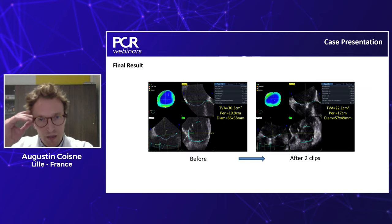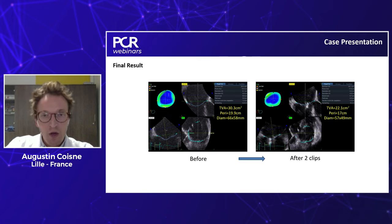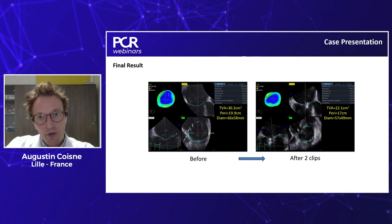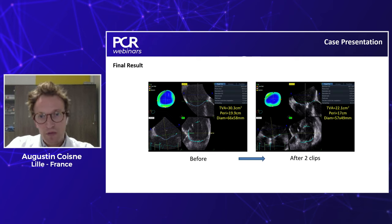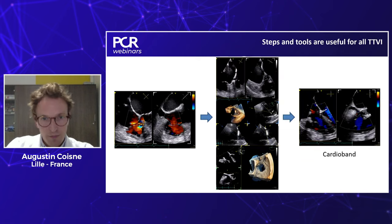We checked the final result in transgastric view — 2D and with and without 3D and color — and were very happy with the grasping of the leaflets. The final result showed a good reduction of TR severity with one clip in the middle and two clips. We also observed a significant reduction in tricuspid annulus dilation: the tricuspid valve area decreased from 30 to 22, and the perimeter decreased from 20 to 17. So there was a meaningful impact on the tricuspid annulus as well.